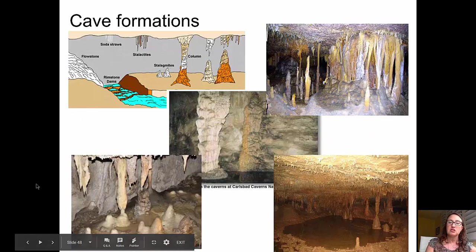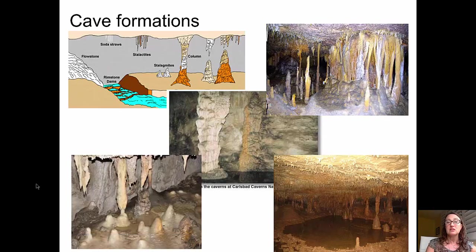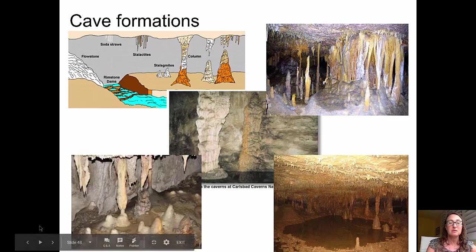Finally, turning to cave formations. We've talked about dissolution in karst; now we're talking about deposition — deposition of carbonate material into cave formations. The typical cave formations you might see include stalactites that hang down from the ceiling, stalagmites that grow up from the floor, and a column where stalactites and stalagmites meet one another. You can see some beautiful pictures of those cave formations here.